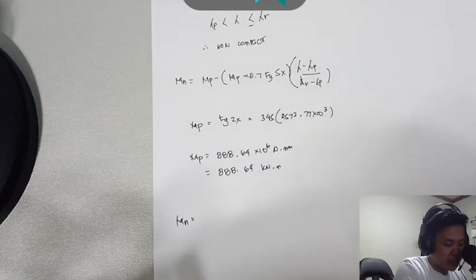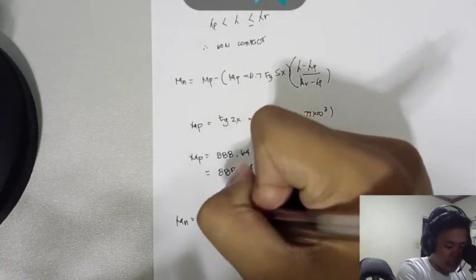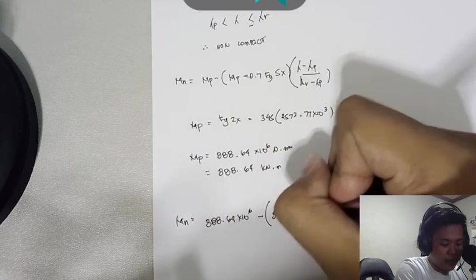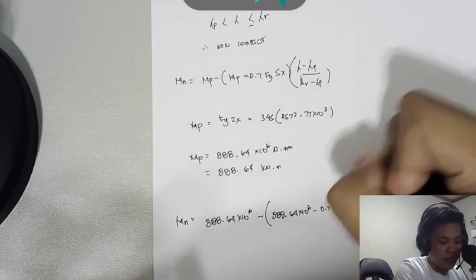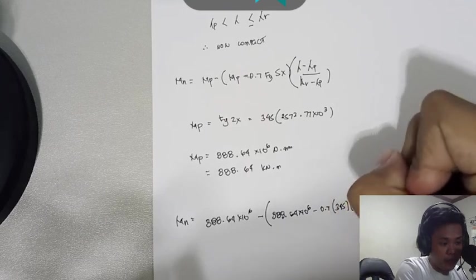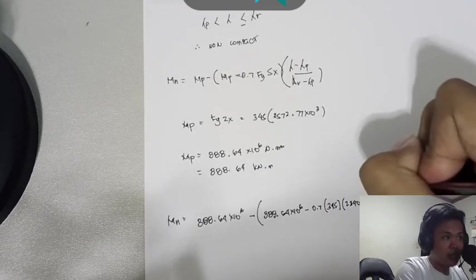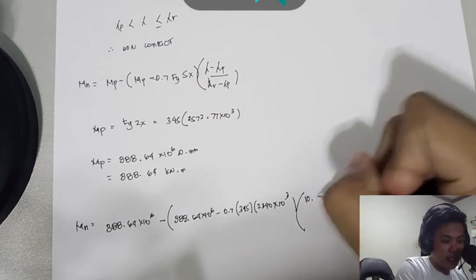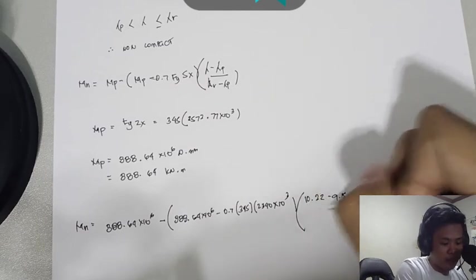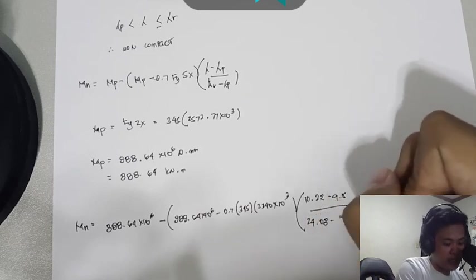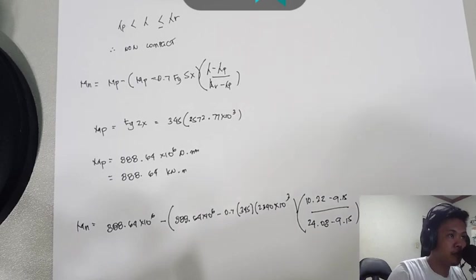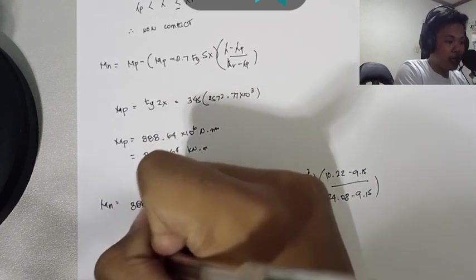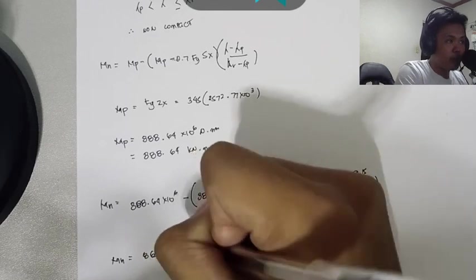Now let's get the value of nominal moment. MN equals, by direct substitution: 888.64 × 10⁶ minus (888.64 × 10⁶ minus 0.7 times 345 times 2,340 × 10³) multiplied by (10.22 minus 9.15) over (24.08 minus 9.15). Now we get a value of nominal moment of 865.45 kilonewton-meter.